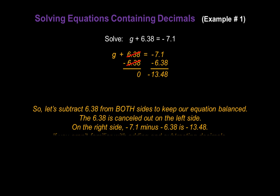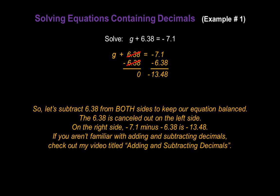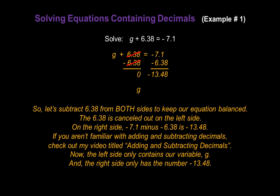Now, if you don't know how I just got that answer and you aren't familiar with adding and subtracting decimals, you might want to check out my video titled Adding and Subtracting Decimals, because I'm not going to go into the details of that in this video. The left side only contains our variable g, so it's now been isolated on the left side, and the right side only has the number negative 13.48. So g equals negative 13.48 is our answer.